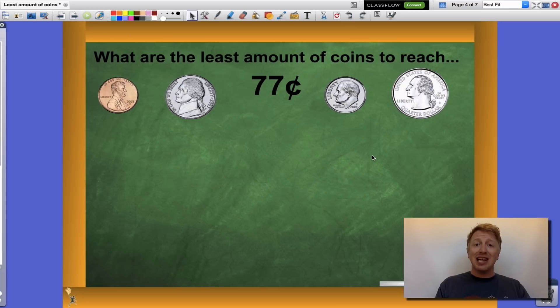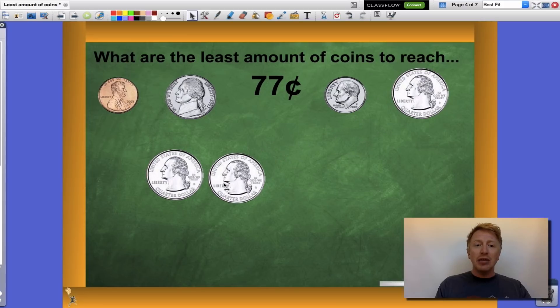Let's look at our next one, seventy-seven cents. What's the least amount of coins? I'm gonna start over here with my largest value, my quarter. One is twenty-five cents. I can add another one to it. That will put me to fifty cents. I'm getting closer, but I'm not quite there yet.